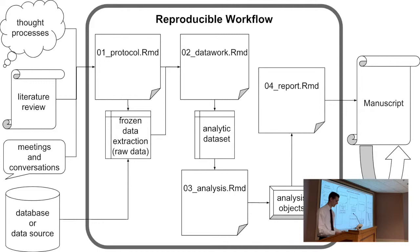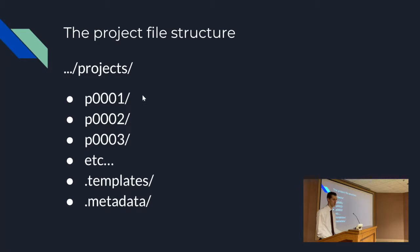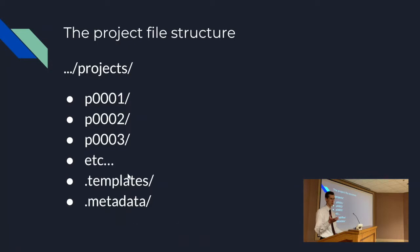Getting to where the rubber meets the road: when using the projects package, everything takes place in the projects folder. Once you've used it a little, the projects folder will contain numbered project subfolders — one, two, three, et cetera — and two other folders: dot-templates and dot-metadata. In default Windows settings, folders beginning with a dot are hidden, because we don't really want you to mess with them unless you really know what you're doing. For more advanced users, the dot-templates folder is where you can put your own custom R Markdown templates.